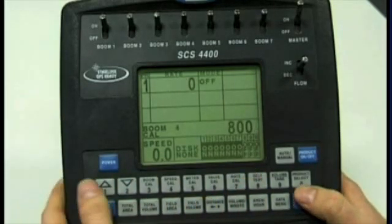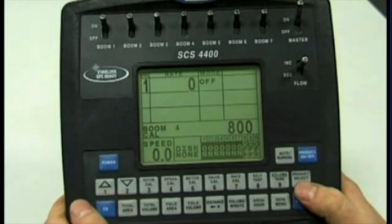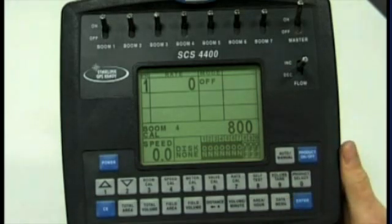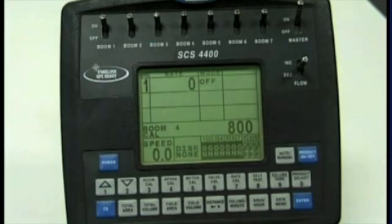...four boom sections, and the 4400 finder will allow you to go up to seven boom sections. Once your boom cal is finished, the console is pretty much ready to use. That's the SCS 4000 series console setting to your figures.